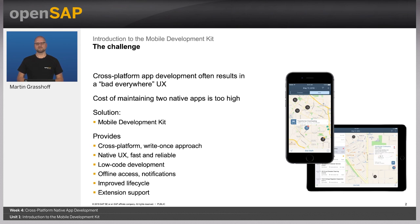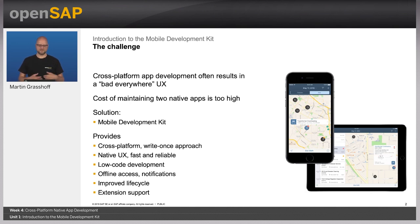One requirement in enterprise software is that you often need to cope with changes — the business or users demand changes in your mobile application frequently. In order to avoid going through the full lifecycle of an application with deployment, signing the code, and distribution of the app, we tried to improve the lifecycle with the Mobile Development Kit to make it easy to roll out changes to the field. The Mobile Development Kit applications are also extensible via extension support.